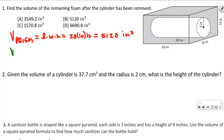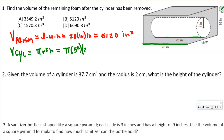Now we're going to find the volume of the cylinder. To do this, we're doing pi times the radius squared times the height. Notice our radius is 5 and our height is 20 inches. So this is going to be pi times 5 squared times 20. We're going to multiply by pi to get them in the same units, so this is going to be 1570.8 inches cubed.